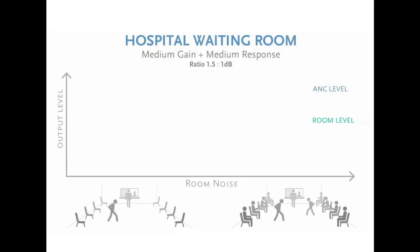Then once the ambient noise recedes, the system automatically returns to a comfortable output level. How ANC does this is by having sensing microphones attached to the physical unit. The unit then analyses the data and dynamically alters the output level.